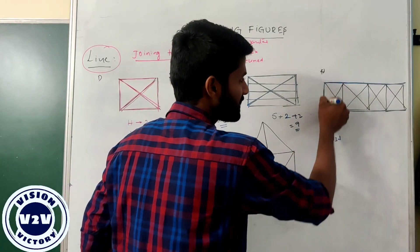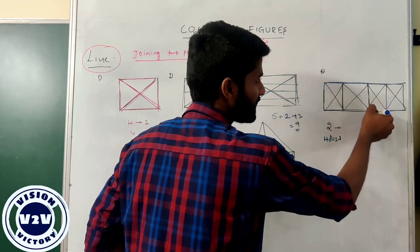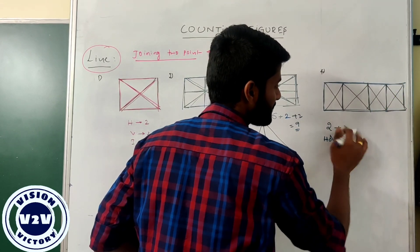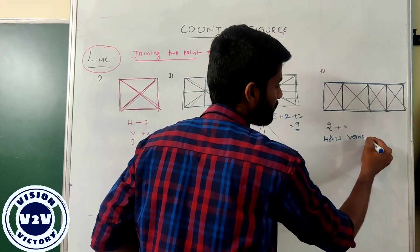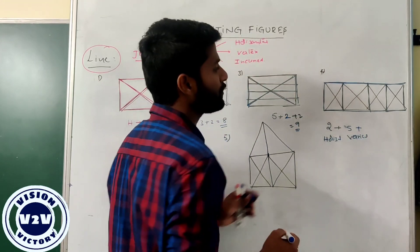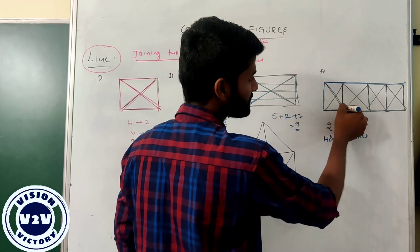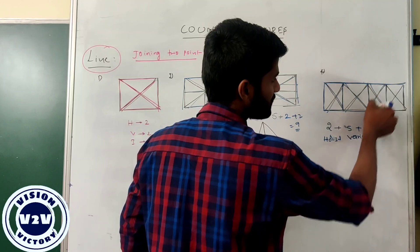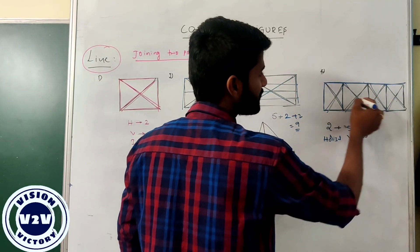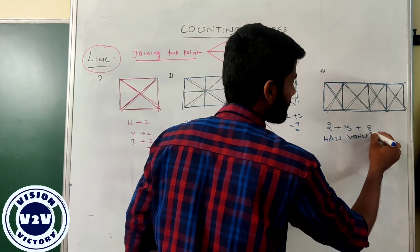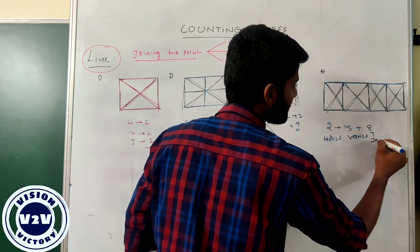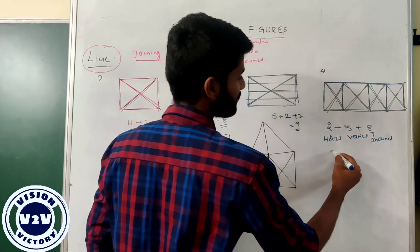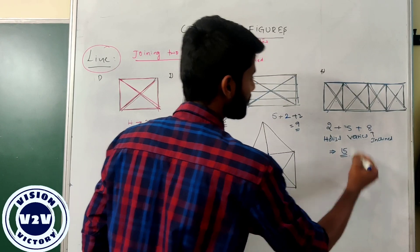For the vertical lines: one, two, three, four, five — the number of vertical lines are five. For the inclined lines: here two, here two, here two — one, two, three, four — four twos are eight. The number of inclined lines are eight. So the total number of lines for this figure is exactly equal to 15.